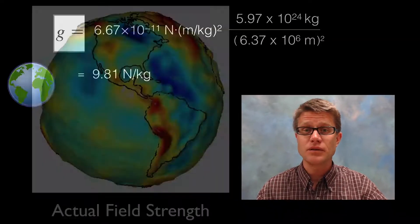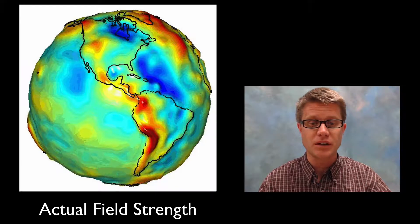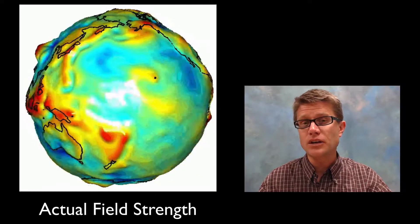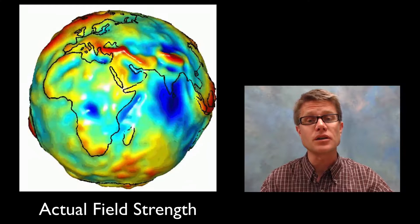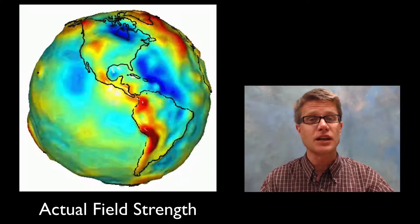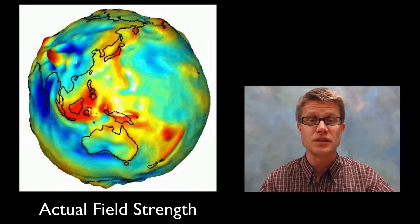And you might say it's going to be the same everywhere on our planet. But it's not. If you look at the gravitational field strength on our planet, and this is a NASA image, it's going to vary depending on where you are. Because the earth isn't consistent. It's not a consistent sphere with consistent density.